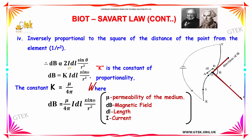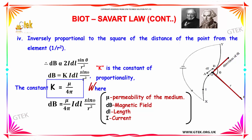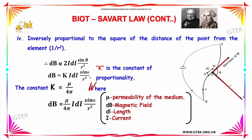The proportionality constant can be replaced by K, which is a constant of proportionality. The formulation is: dB = K × I × dL sinθ / R². The constant K can be replaced with μ / 4π, where μ is the permeability of the medium, dB is the magnetic field, dL is the length, and I is the current. So, dB = μ / 4π × I × dL sinθ / R².